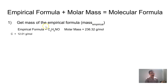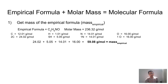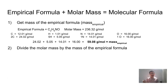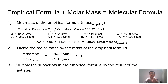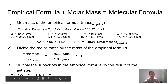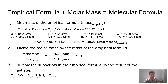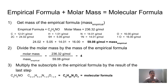The first thing I'll do is get the mass of my empirical formula by figuring out what each element contributes overall and adding those up. Next, I'm going to divide the molar mass by the mass of the empirical formula: 236.32 divided by 59.08 gives me approximately 4. Now all I have to do is multiply this number by each subscript in my empirical formula. So C2H5NO multiplied by 4 gives carbon 2×4, hydrogen 5×4, and nitrogen and oxygen each 1×4, yielding a molecular formula of C8H20N4O4.